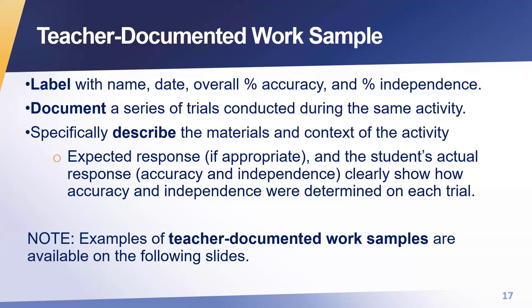There's something called a teacher documented work sample — it used to be called a teacher scribed work sample, but that was causing unnecessary confusion. A teacher documented sample is for students who don't produce a lot of work samples. Just like other pieces of evidence you submit, it should be labeled with the student's name, date, and the overall accuracy and independence. It can document a series of trials conducted during the same activity, and it's going to specifically describe the materials and the context of the activity. When you're doing a teacher documented work sample, it should be really clear to someone looking at it exactly what the expectation was, what the student's response was, and how the accuracy and independence was determined.